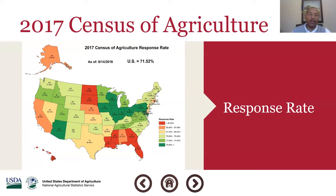I want to talk a little bit about the Census of Agriculture program. The Census program has been in place since 1840. It was always conducted by the U.S. Census Bureau until it moved over to USDA in 1997. We've conducted the last five censuses at USDA NASS. The most recent version was released on April 11, 2019, for the 2017 data.